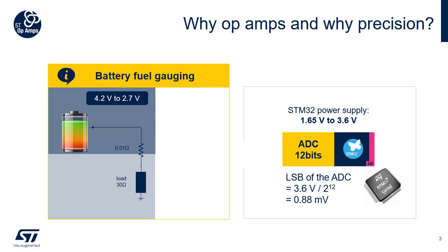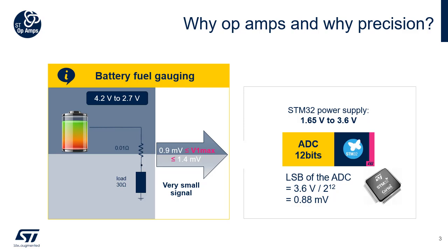By choosing the right OpAmp, we can limit the error on the output as much as possible. In the example shown in this slide, let's consider a battery delivering a maximum current of 140 mA through a shunt of 10 mΩ. The resulting voltage will be 1.4 mV maximum, and the LSB of the ADC is 880 µV.